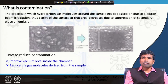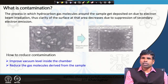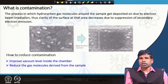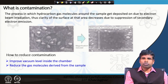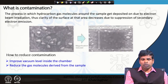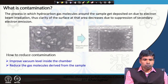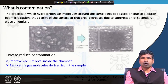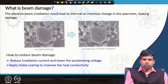In order to reduce contamination, we can improve the vacuum level inside the chamber — if the vacuum level is high, we can remove hydrocarbon molecules from the chamber and deposition will not occur. We should also reduce gas molecules derived from the sample itself. Some samples can also produce gas molecules, so we should use the adhesive tape or conductive paste in a manner that does not produce gas molecules. In this way contamination can be reduced.